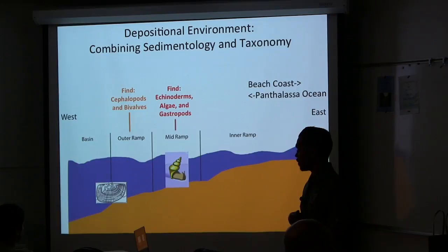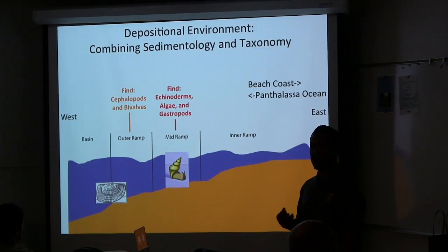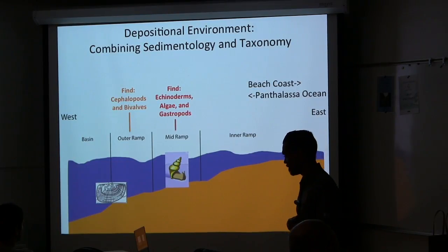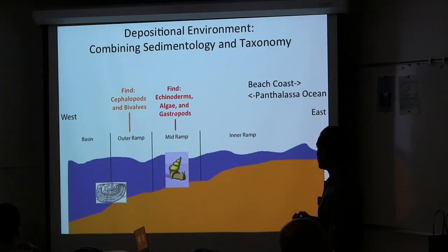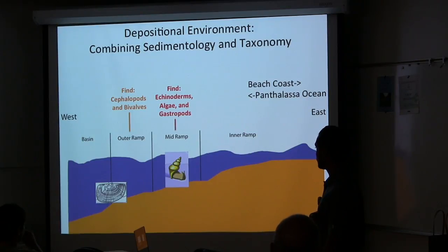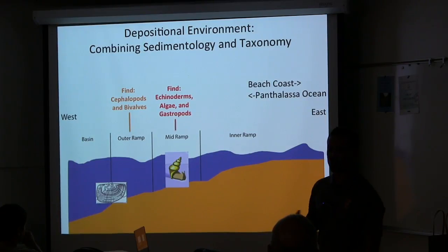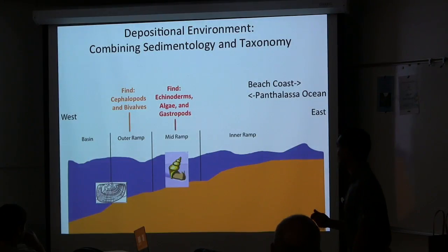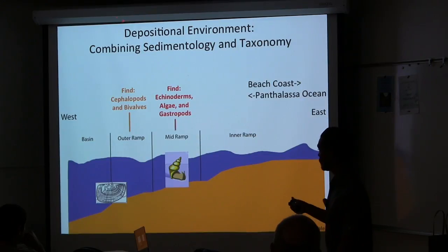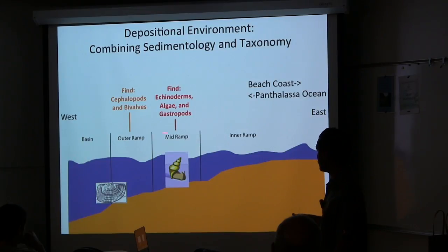Depositional environment helps test if organisms are tracking their environment or if they are absent from the rock record. It's more likely to find echinoderms, algae, and gastropods in a middle ramp, and more likely to find cephalopods and bivalves in an outer ramp. If these organisms are not observed, they are absent from the rock record, suggesting low fauna abundance. A change from echinoderms and gastropods to cephalopods and bivalves would suggest a depositional environment change from middle ramp to outer ramp.